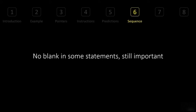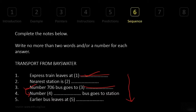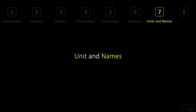What if there's no blank — meaning the answer is already provided? It's still important to follow along. If the audio discusses that already-answered item, you need to track it so you know when the next blank is coming. For example, when they describe the '706 bus,' you know that corresponds to question three — even though there's no blank — so you know the next answer is coming up. Always follow the sequence, blank or not.